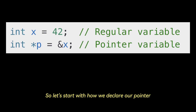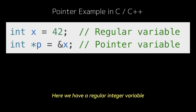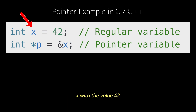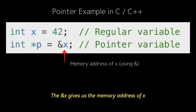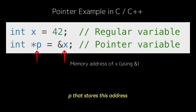Let's look at how we declare a pointer with an example in C or C++. Here we have a regular integer variable x with the value 42. The ampersand x gives us the memory address of x. Then we use the asterisk to declare a pointer p that stores this address. p is like a GPS coordinate that leads us to x.